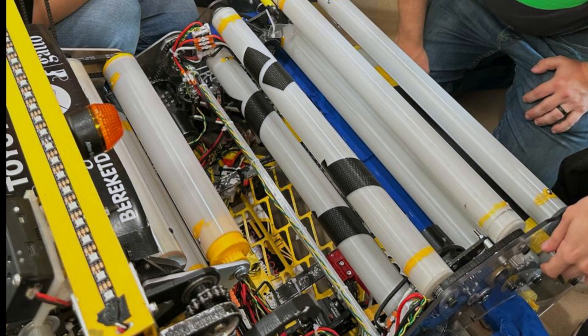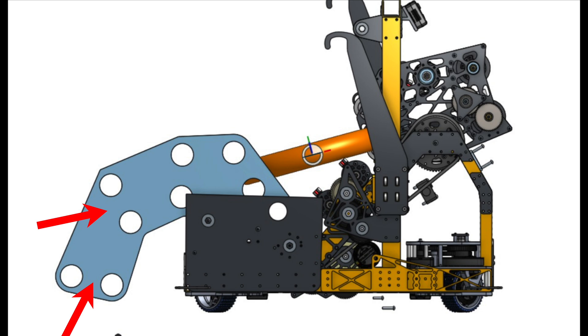The second redesign also underperformed. The motor was right behind the first set of rollers, blocking nodes intaking from the sides. The compression between the rollers was too small, causing nodes to get stuck in the middle of the mechanism, forcing us to remove the node by powering the intake in reverse.